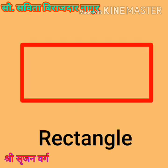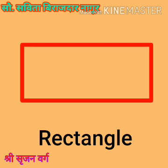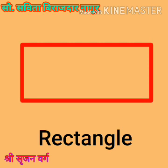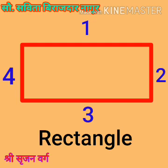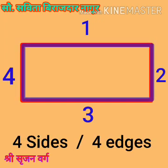Now look at the rectangle. It has four sides. Sides or edges are the straight lines that form the shapes. Count how many straight lines the rectangle has: 1, 2, 3, 4. Rectangle is formed with four straight lines. It means rectangle has four sides or four edges.